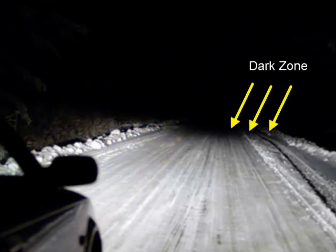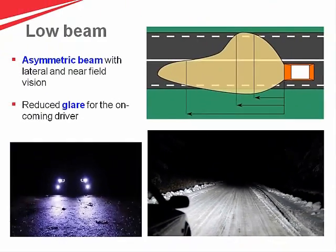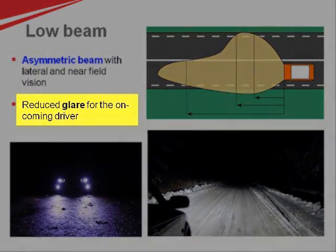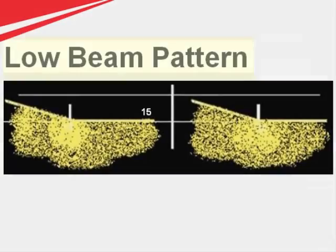On the right side, the dark zone which you see is because the light from the right headlamp is dipping downwards. In a way, it is much safer for the driver inside the oncoming car, as the bright light does not hinder his visibility.